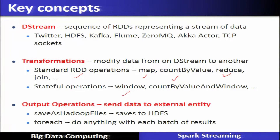Besides transformations, there are output operations to be performed on DStreams in Spark streaming. These output operations send data to external entities, save as Hadoop files, or save to HDFS for each batch of results. Output operations either save to HDFS, save as a file, or perform further actions using the forEach command.